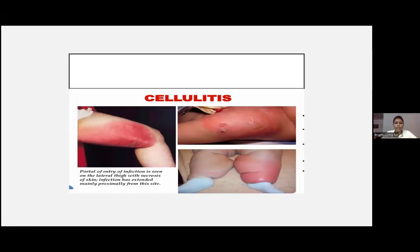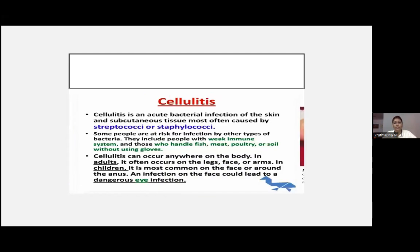Cellulitis is a very common condition. One important thing to stress is how to differentiate cellulitis from erysipelas. Cellulitis is an acute bacterial infection of the skin and subcutaneous tissue caused by Streptococcus and Staph. It can occur anywhere on the body — in adults it often occurs on the leg, face, and arms.